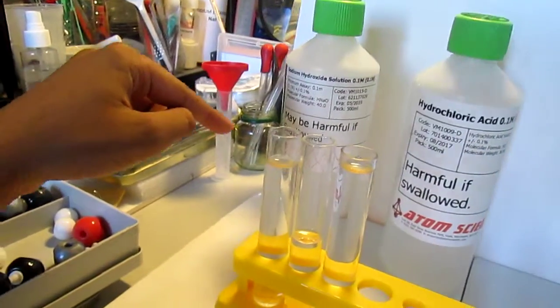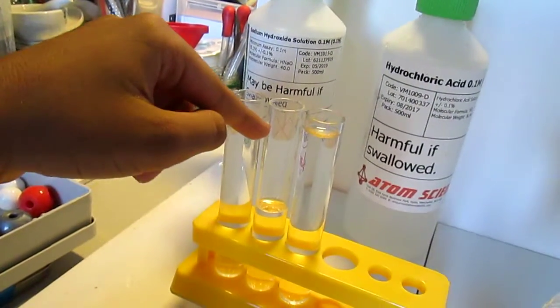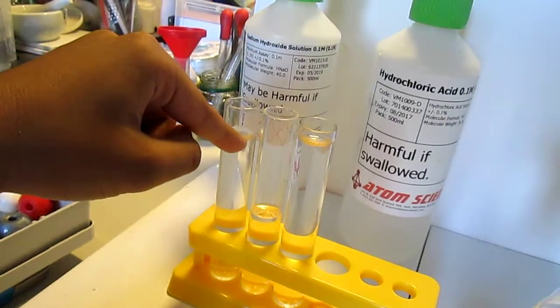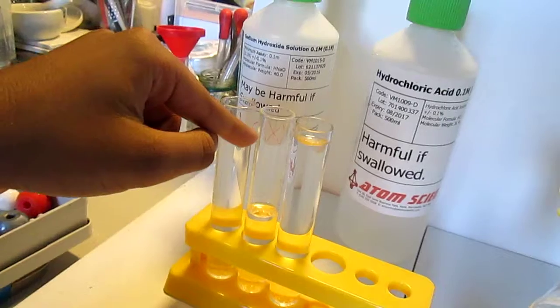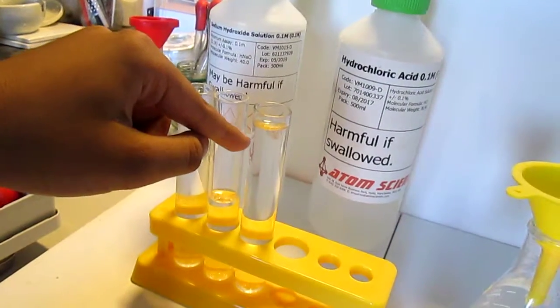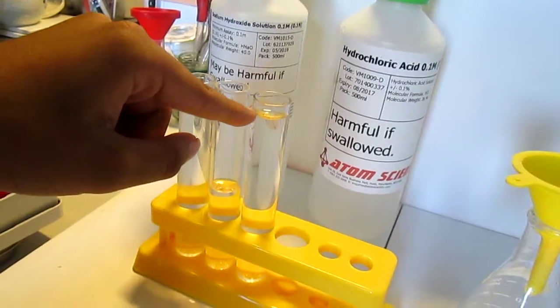The first test tube on the left contains phenolphthalein. The second test tube on the left contains sodium hydroxide which is a strong alkaline. The third test tube contains hydrochloric acid which is a strong acid.